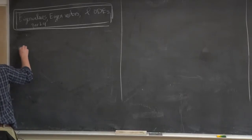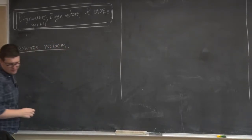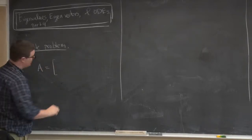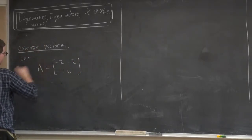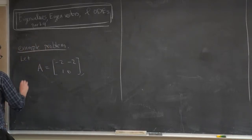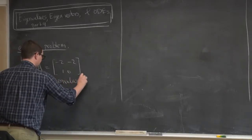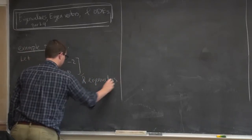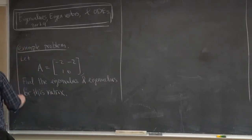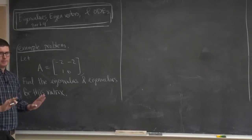Here's an example problem. We're going to let A be the following matrix: minus 2, minus 2, 1, 0. This is like the matrix we had before, but I think I flipped either a column or a row. So let A be this matrix and find the eigenvalues and eigenvectors. I've kind of baked into this that it's possible — not every matrix admits a basis of eigenvectors, so just beware of that when doing something in practice.